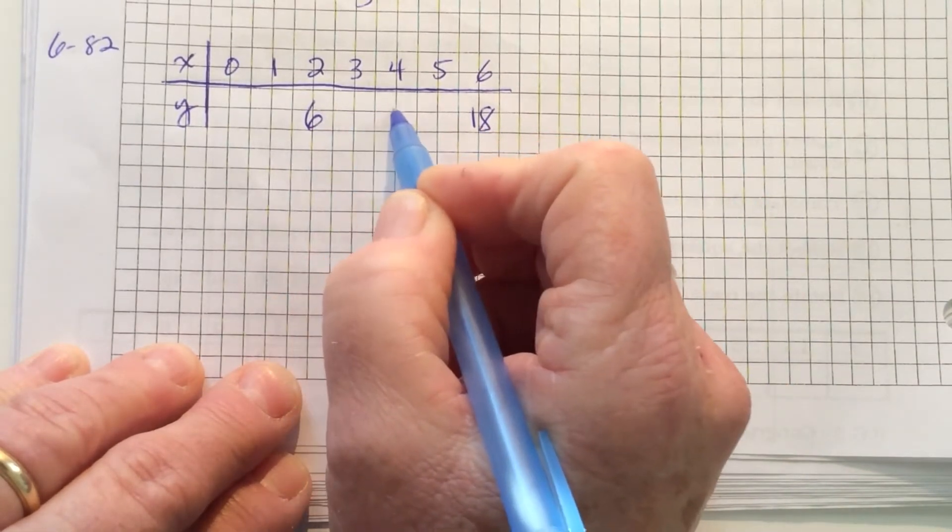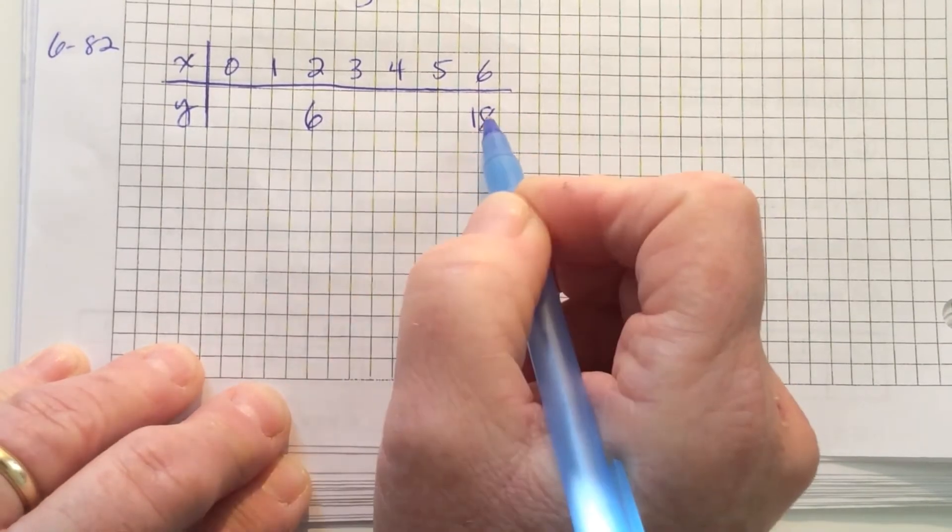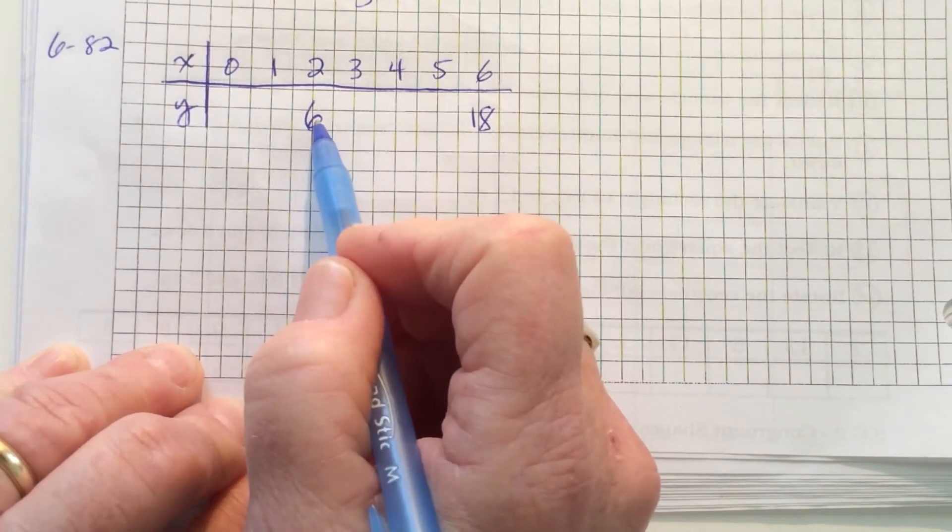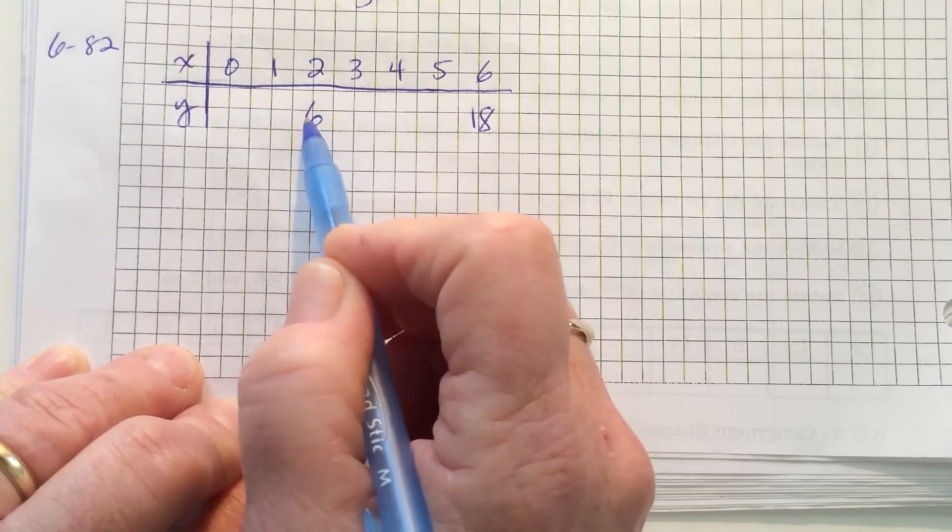1, 2, 3, 4 hops to go up 12. So that means that the growth has to be 3. 12 divided by 4 is 3.